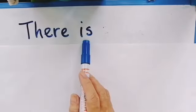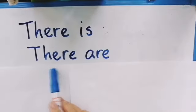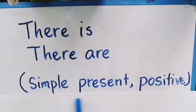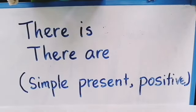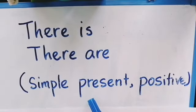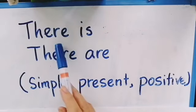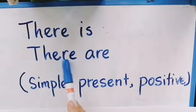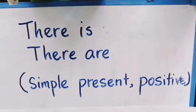In today's lesson, we shall be learning the phrases 'there is' and 'there are' in the simple present positive form. In Bahasa Malaysia, 'there is' and 'there are' mean 'terdapat'. Now, let's learn when to use 'there is' or 'there are' correctly in the beginning of a sentence.